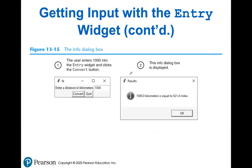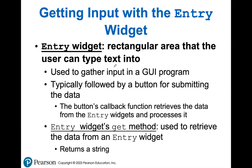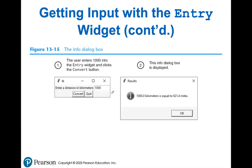The entry widget just allows your user to type any sort of text inside of it. As you can see here, we have an entry box where we're asking the user to enter a distance in kilometers. After they enter some sort of distance, they can convert it to miles or they can quit. If they click convert, we're displaying a dialog box that says '1000 kilometers is equal to 621.4 miles.'